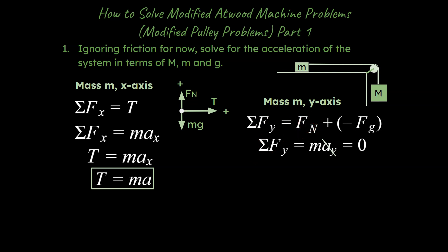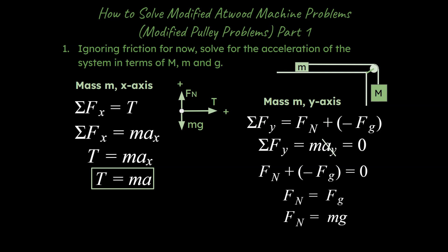It turns out the y-axis analysis is not as helpful here because we don't have friction, and the normal force is normally crucial for friction problems. The acceleration in y is zero — this object is not moving in the y-axis at all. So we set these things equal and see that the normal force equals mg. It's not as useful in this case, but it gets us into the habit of solving force problems in a very systematic way every single time: free body diagram, sum of forces in x, sum of forces in y.